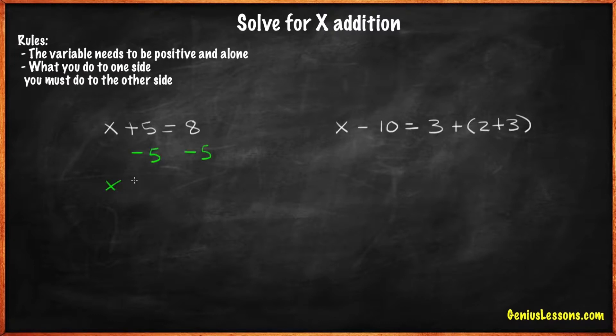5 minus 5 is 0, and 8 minus 5 is 3. x equals 3.